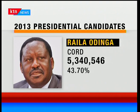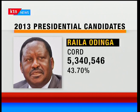Raila Odinga in 2013 garnered 5.3 million votes — about 43.7%. The National Super Alliance has brought together different parties with principals from different parts of the country, hoping to play across different regions to get more numbers. With 19 million registered voters in 2017, there have been a lot of polls already, some suggesting a possible runoff and some suggesting the gap between the two main candidates seems to be closing.